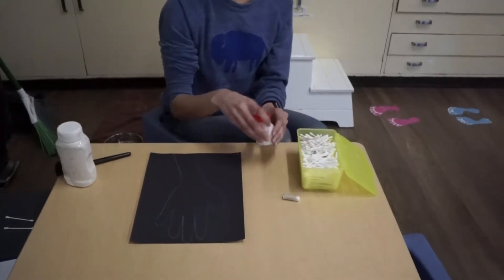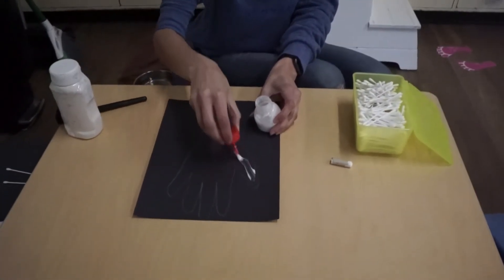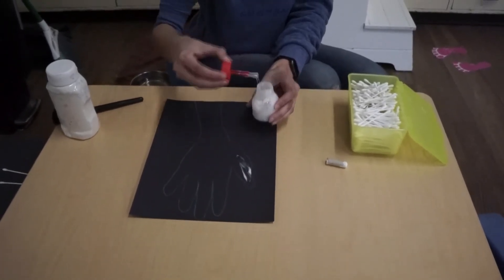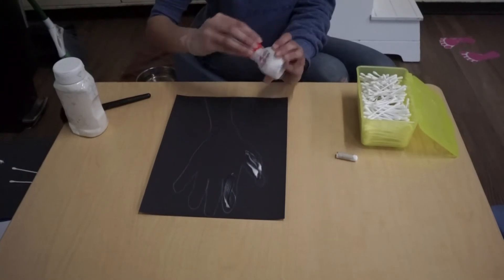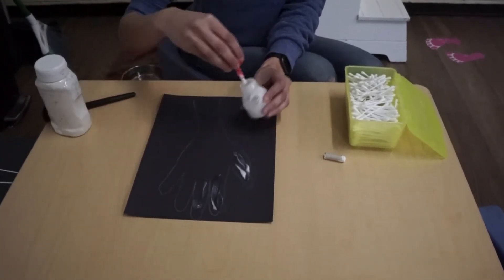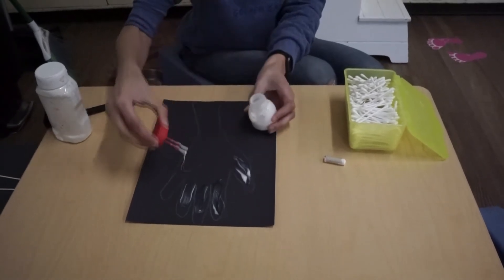Next you would need your glue and you're going to put glue all over your paper on each of your fingers. So one, two, three, four, five.